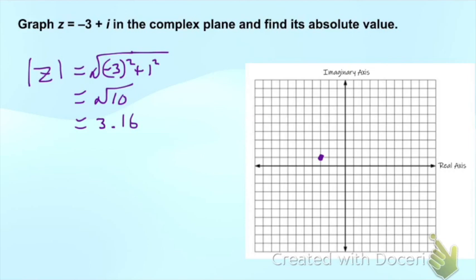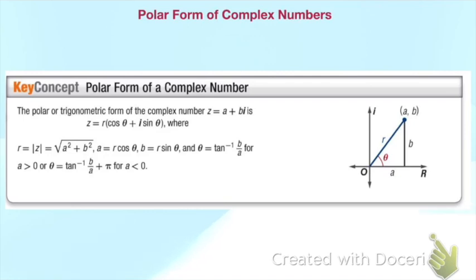Now we're going to move on to looking at the polar form of a complex number. If we have the complex number z = a + bi, the way we make it into polar is z = r(cos θ + i sin θ), where the radius is what we just did, the absolute value. So we take the square root of a² + b², and that is our r.